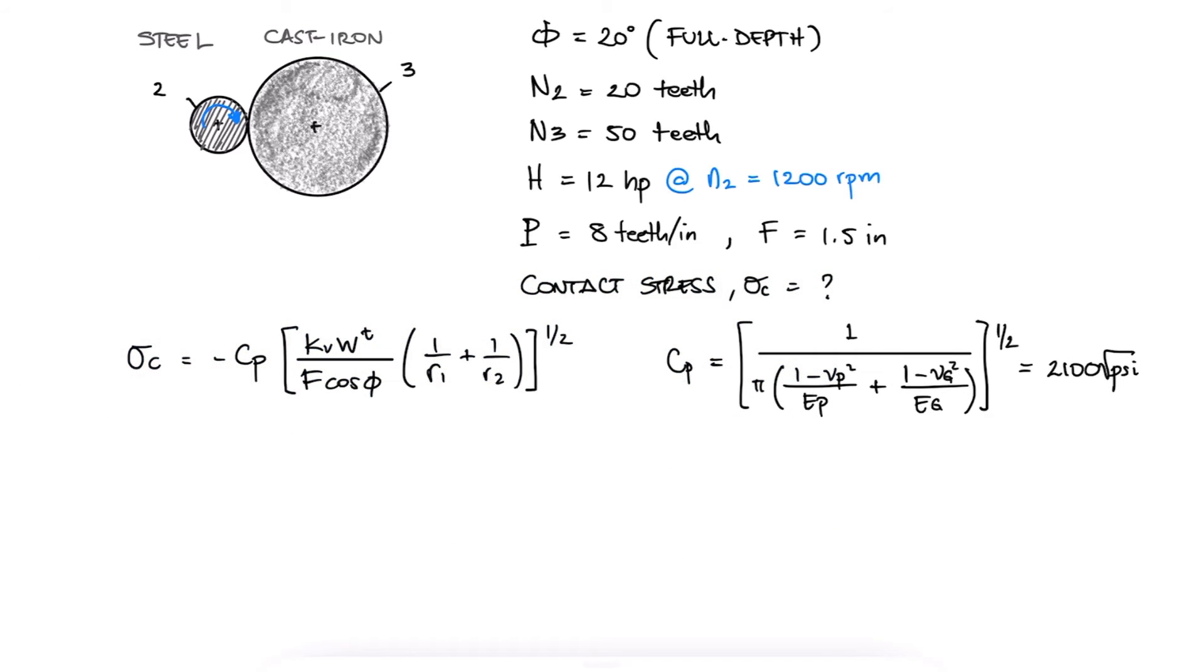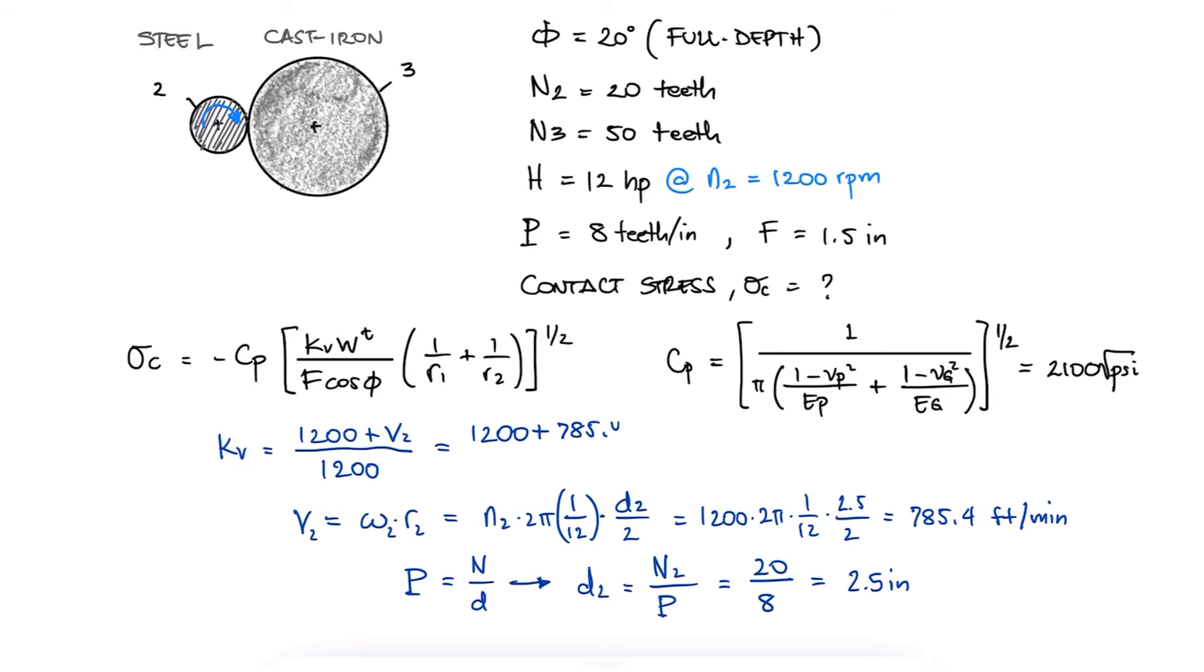Just like we did for the examples of the previous main video, the velocity factor kV for cut or milled profiles in English units will depend on the pitch line velocity and therefore the diameter of the pinion. With the pinion's diameter and its pitch line velocity in feet per minute, we find the velocity factor.